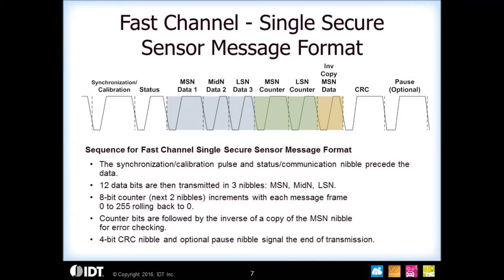The second fast channel format is called the single secure message. This one also starts with a synchronization pulse, then the status nibble, followed by 12 bits of data, then an 8-bit counter that increments from zero to all ones and then rolls over back to all zeros, the inverse of the most significant nibble, a CRC, and then a pause pulse.